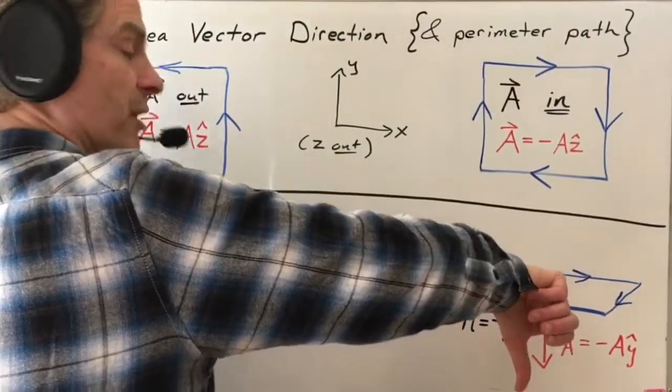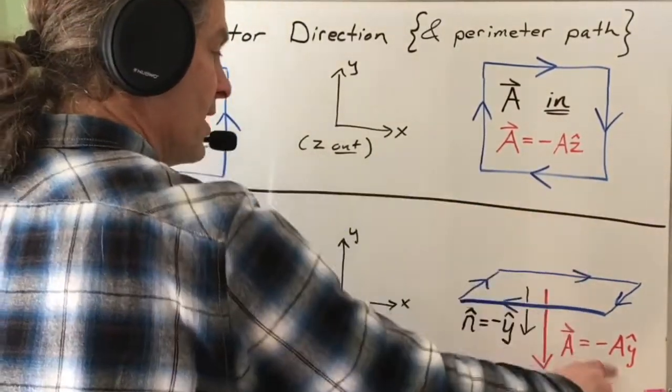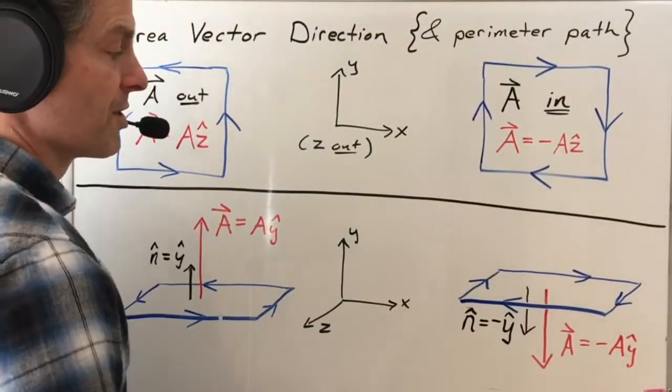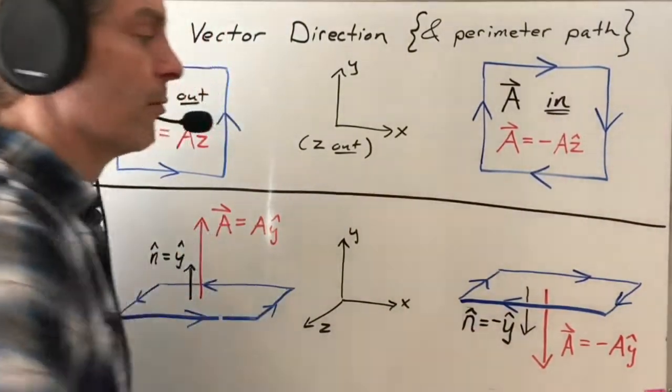again, using my right hand, because if you use your left hand, you'll get it all backwards. The area vector is in the negative Y direction in this coordinate system. Or you could talk about the unit normal vector being in the negative Y direction.